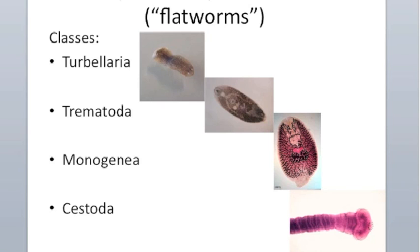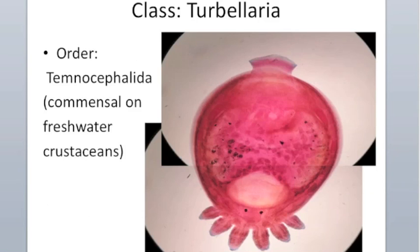The terbalarians are interesting because they are the group from which the parasites arose. There are many free-living individuals, but some are commensal and even a few are parasitic. The parasitic ones tend to parasitize echinoderms, like sea stars, brittle stars, and sea urchins. The temnocephalida, an order of terbalarians, are commensal on freshwater crustaceans. Being commensal is a reasonable first step towards parasitism.